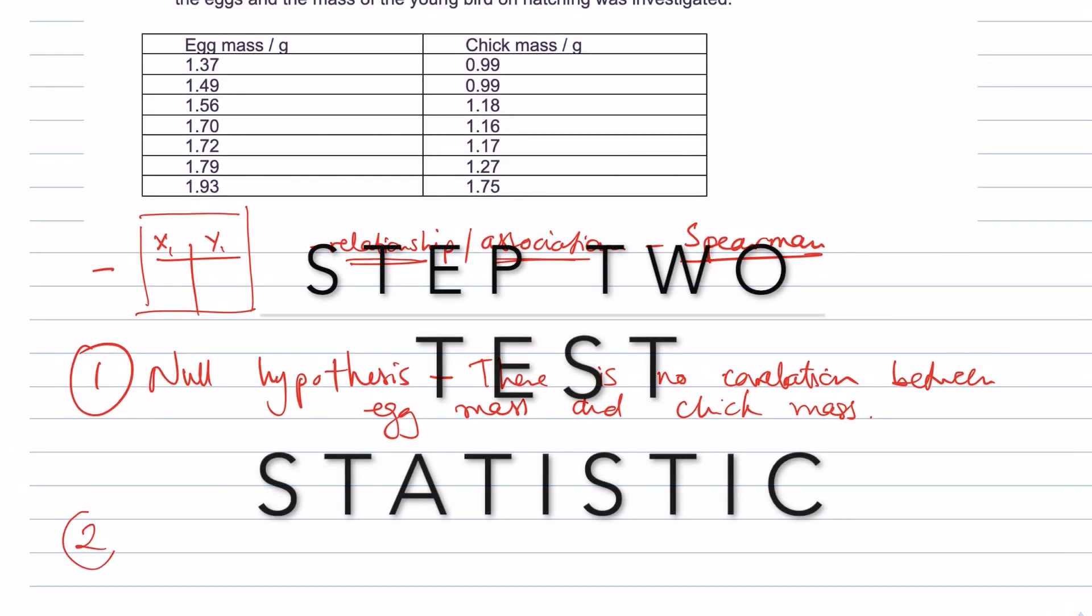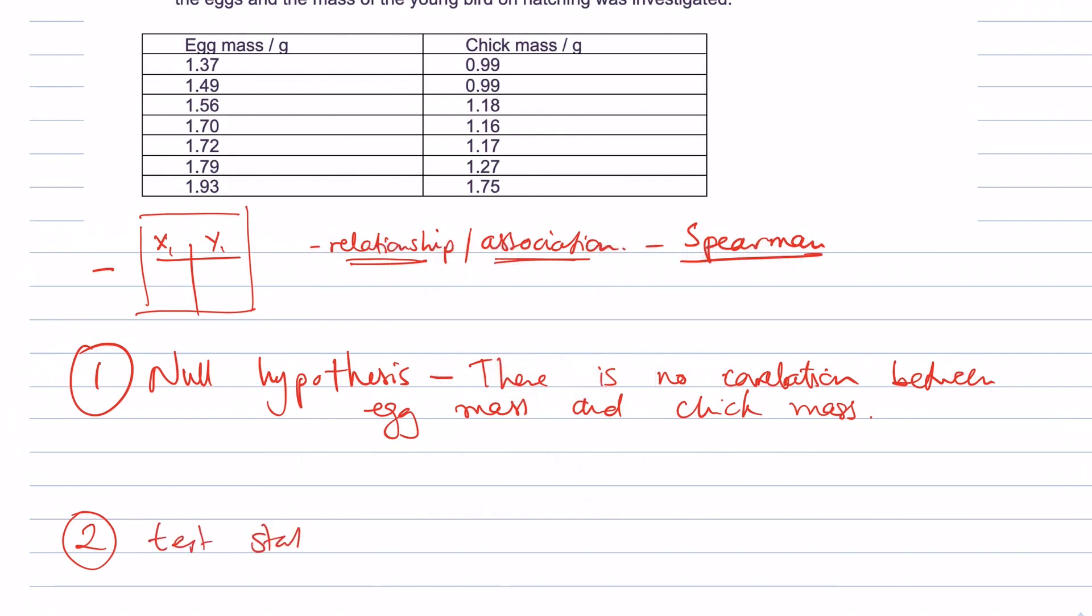Stage two would be to use the data to calculate our test statistic. And in this case, it's going to be the Spearman rank correlation coefficient. Let's have a look at the equation. The equation is rs equals 1 minus 6 multiplied by the sum of all the differences squared, divided by the number of pairs of data squared minus 1.